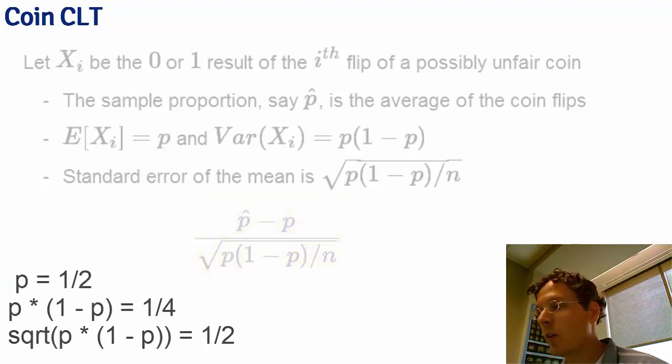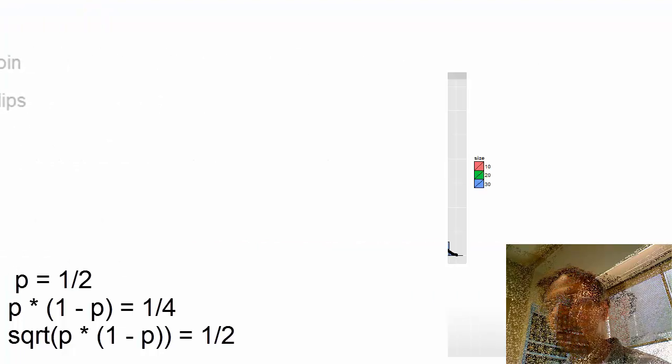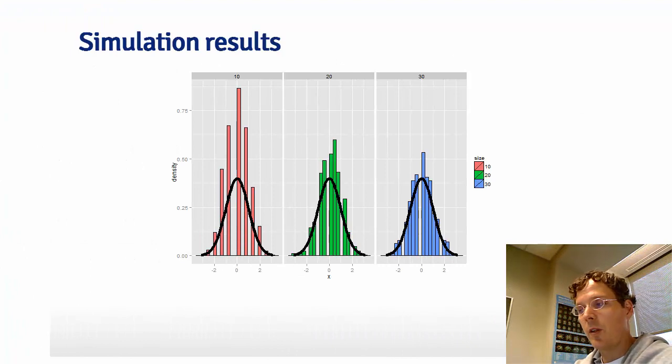Now notice if the coin is fair, then p is 1-half, and p times 1-p is a quarter, which as a square root is 1-half. So the standard error for a fair coin flip is 1 over 2 square root n. So let's flip the coin n times, take the sample proportion of heads, subtract off 0.5, and multiply the result by 2 square root n. Here's the result of our simulations.